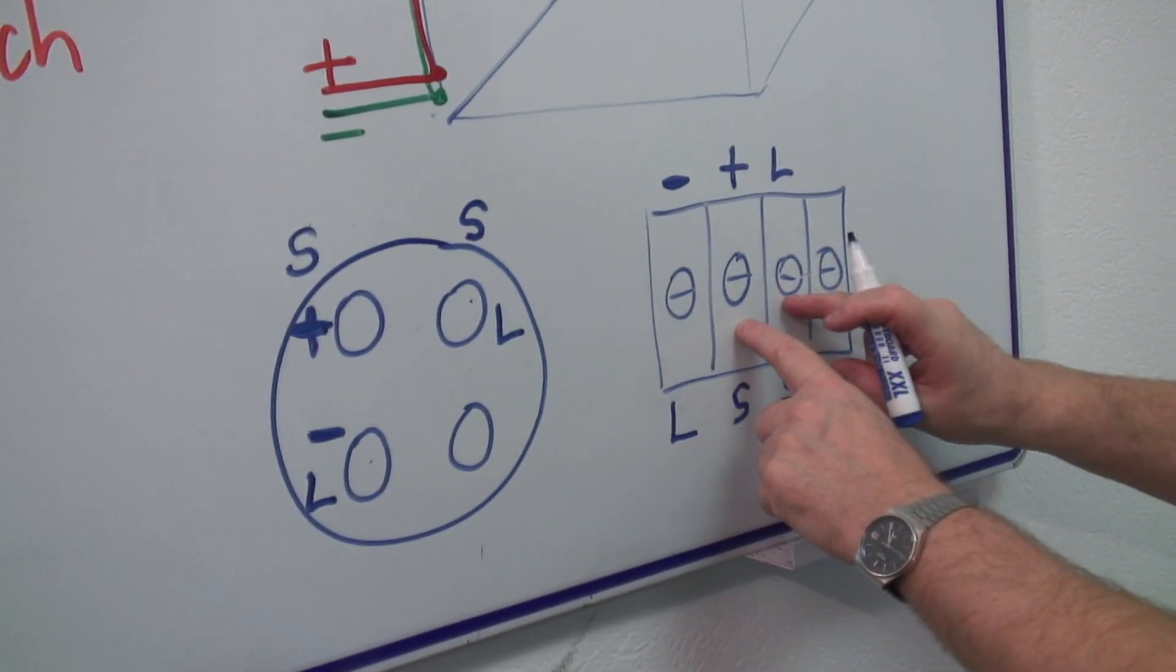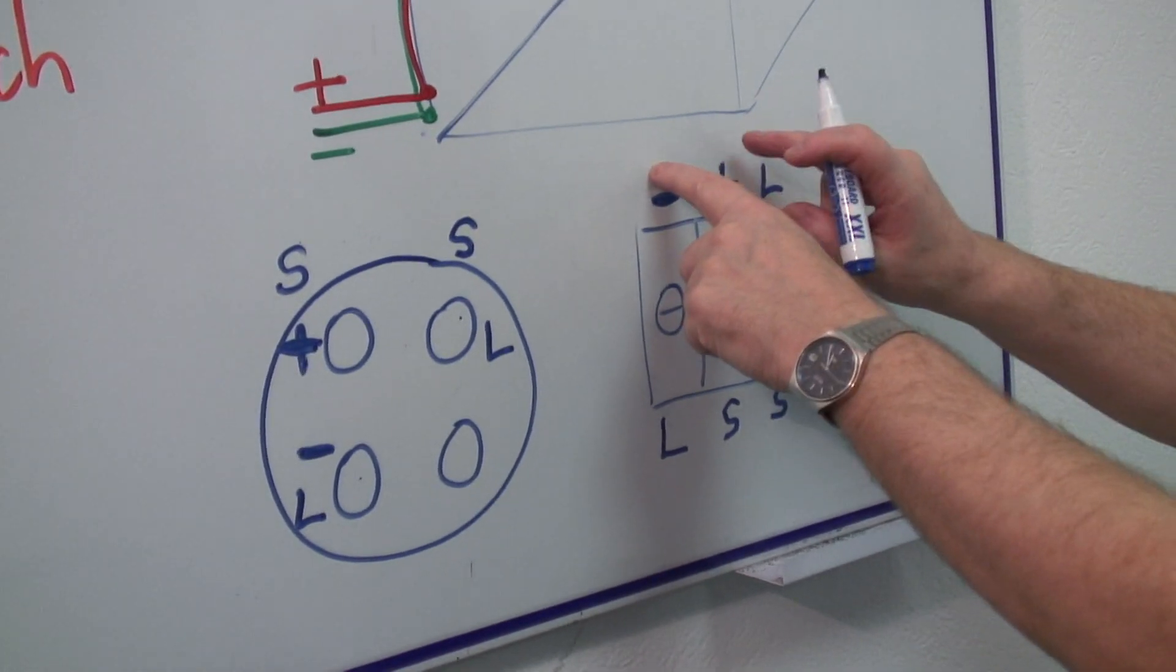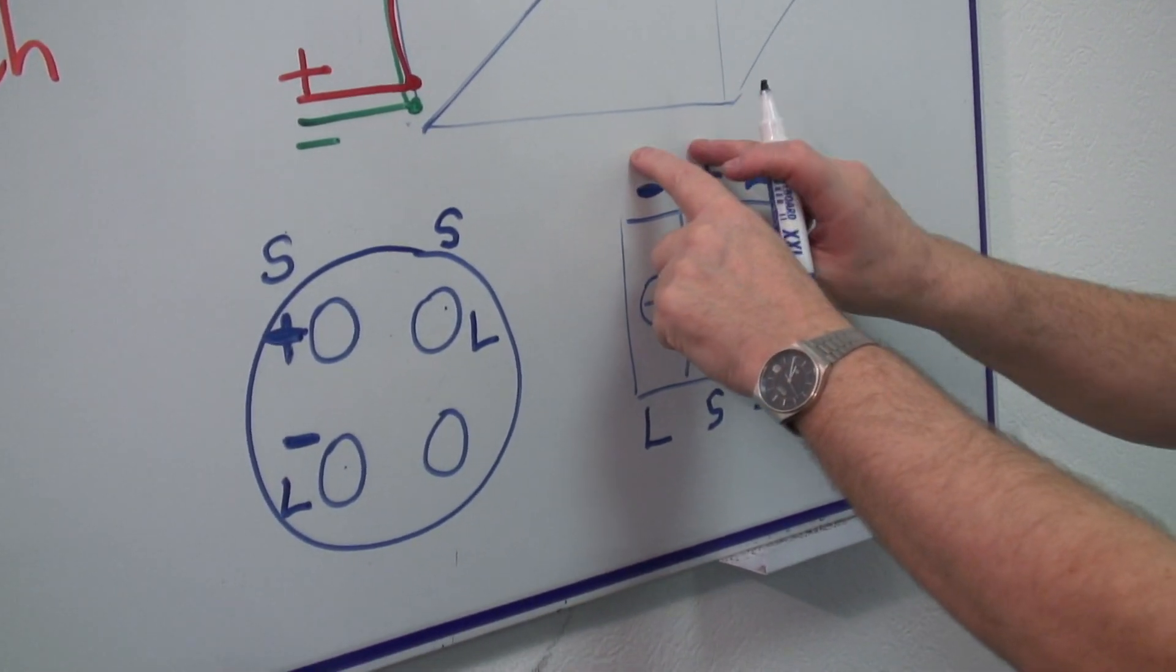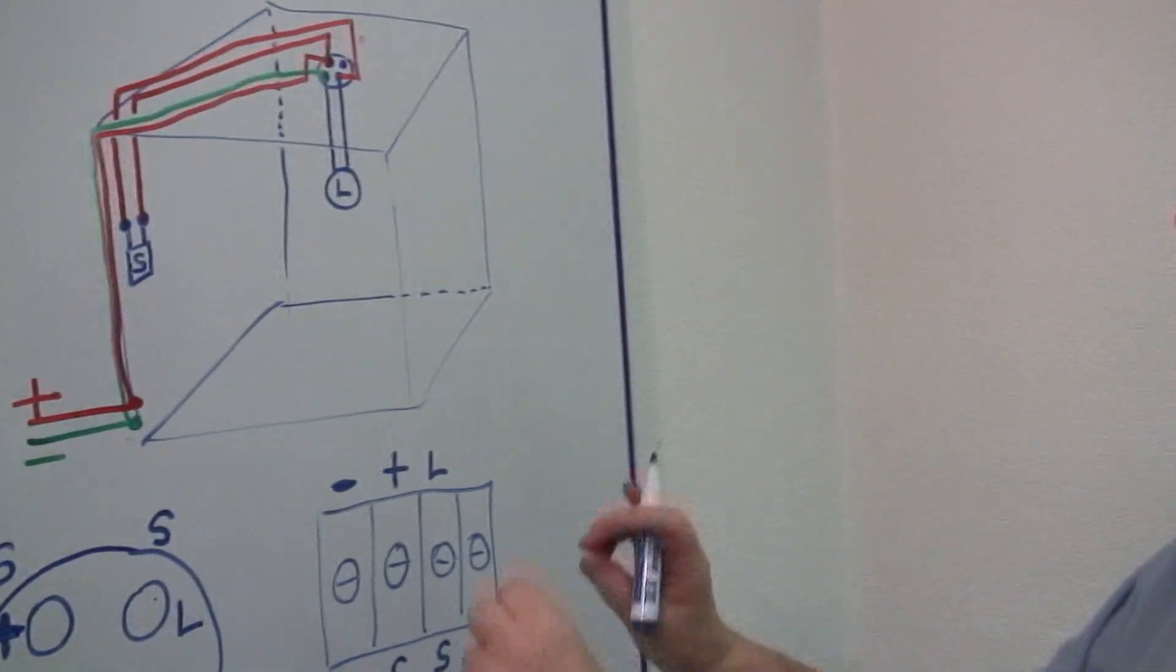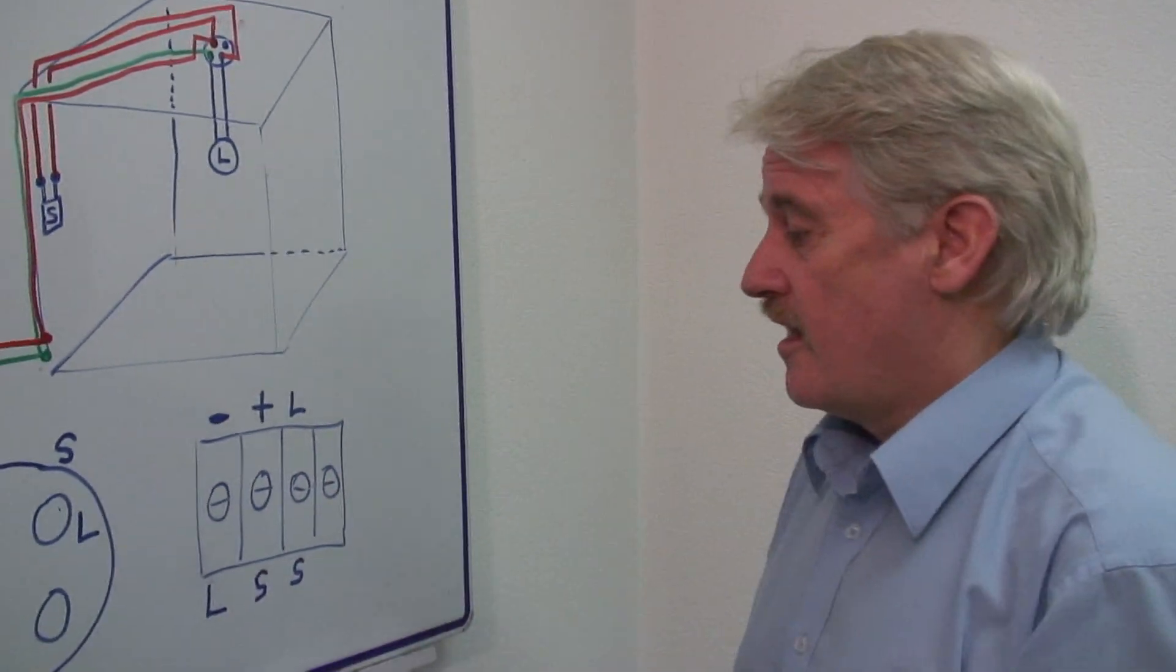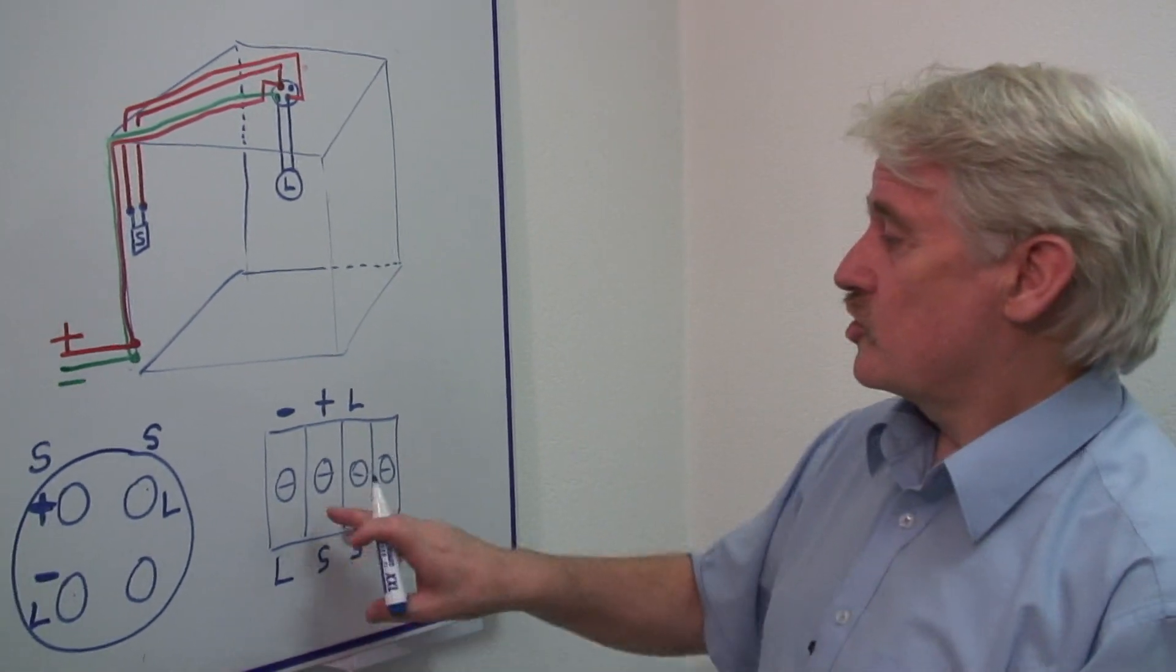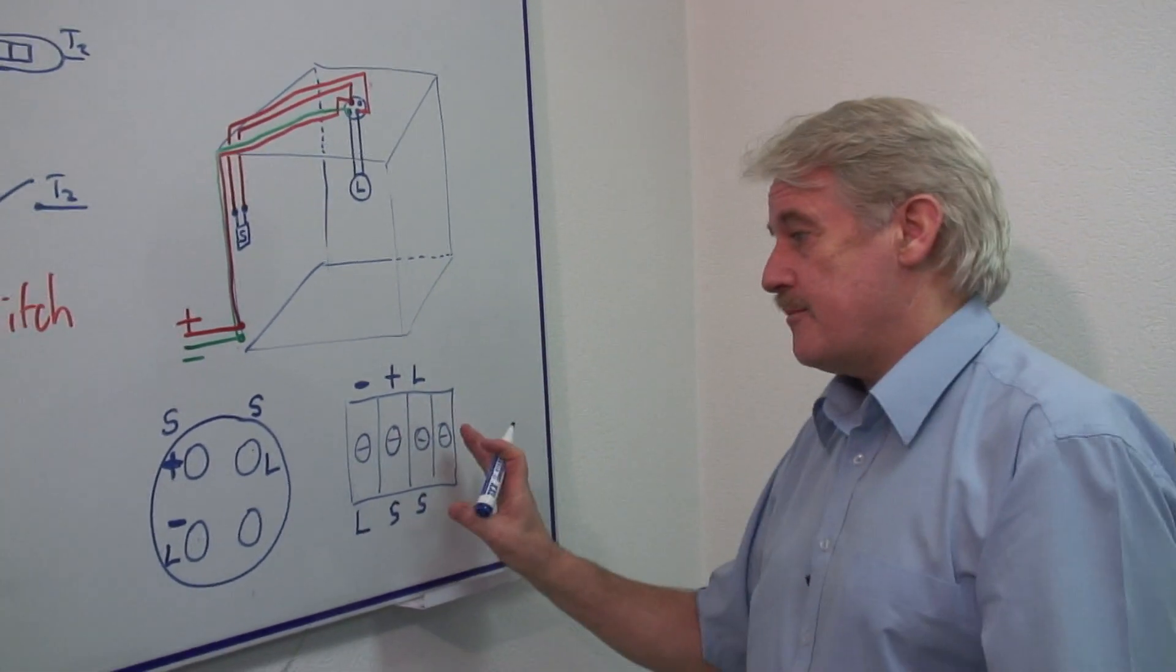So, the lamp is connected to that and that, the switch to that and that. The positive to that, the negative to that and the positive to that. It's as simple as that. And you do it the same for each connection. Then your switch will control this lamp and this lamp only.